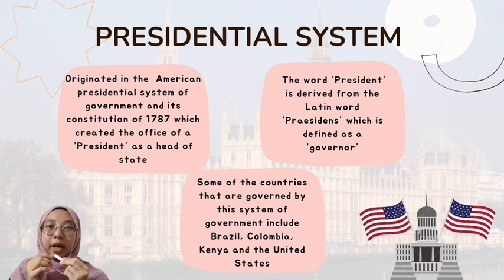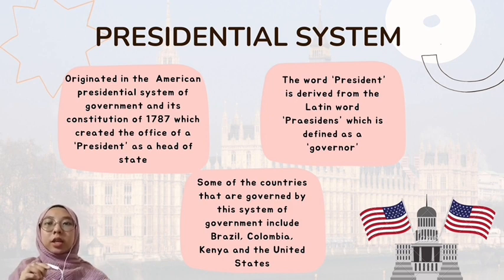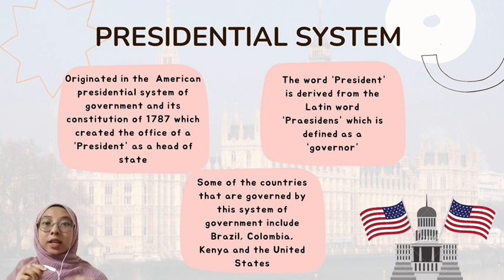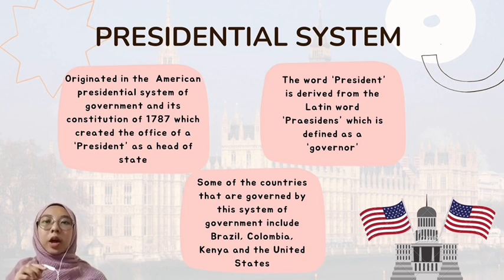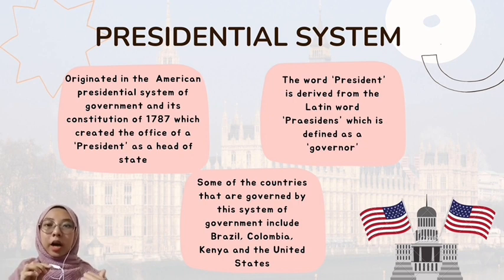Meanwhile, the presidential system can be regarded as the most common governmental system applicable in certain nations. The system originated in the American presidential system of government and its constitution of 1787, which created the office of president as head of state. Originally, the word president is derived from the Latin word 'praesidens', defined as a governor. The president in the presidential system possesses legislative power that allows him to exercise political leadership by proposing legislation, leading the legislative agenda, and executing legal force. Countries governed by this system include Brazil, Colombia, Kenya, and the United States.